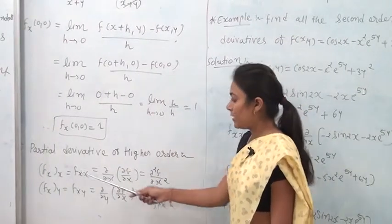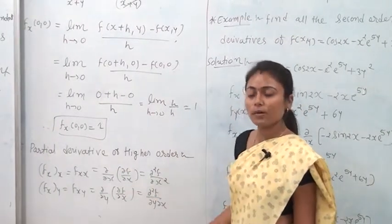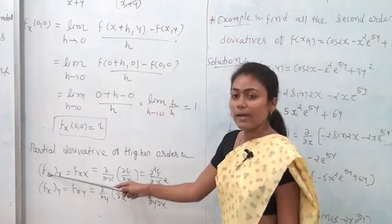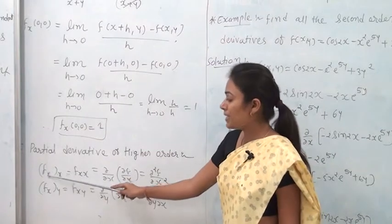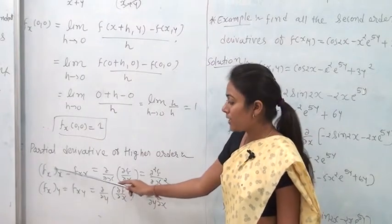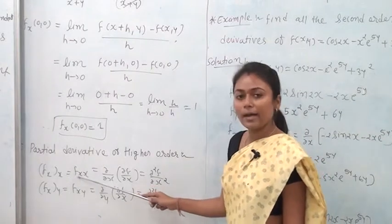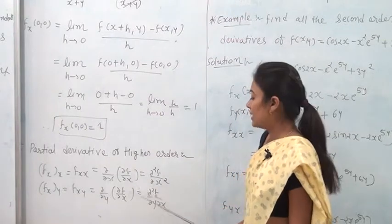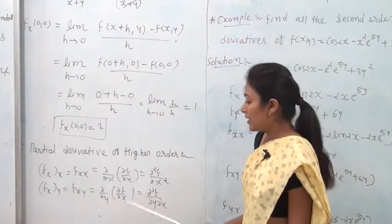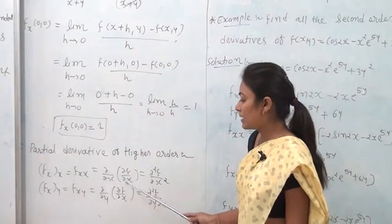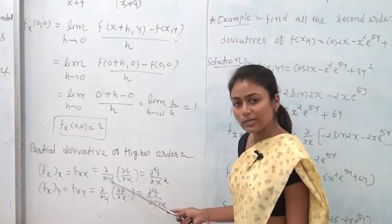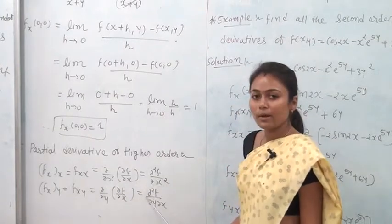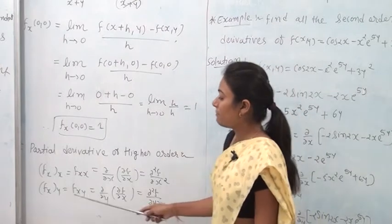For higher-order partial derivatives: the second derivative f_xx is defined as ∂/∂x of (∂f/∂x), equal to ∂²f/∂x². That means you first find ∂f/∂x, then differentiate again with respect to x to get f_xx = ∂²f/∂x².